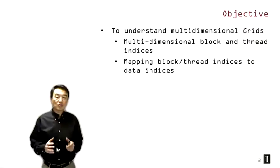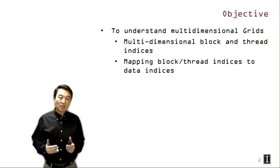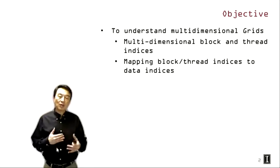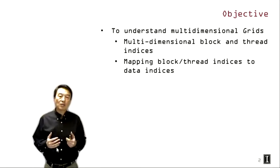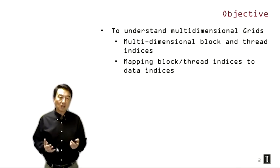The objective of this lecture is for you to understand the use of multi-dimensional thread grids. In particular, we're going to be discussing the use of multi-dimensional block and thread indices, and we'll also be discussing how we can in practice map block and thread indices to data indices to process two-dimensional pictures. After this lecture you should be able to easily generalize all the concepts into the processing of three-dimensional data structures using three-dimensional blocks and grids.